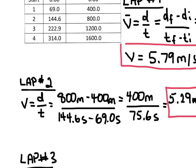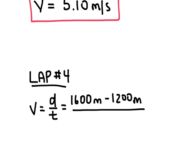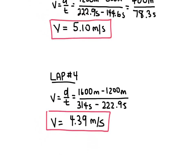And we have 314 seconds. That's our final time, minus that initial time there of 222.9. And so we have 314 seconds minus the initial time. And so we get a speed of 4.39 meters per second. And there's the speed, average speed, of her fourth lap.